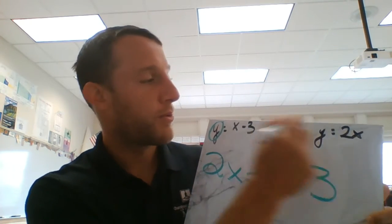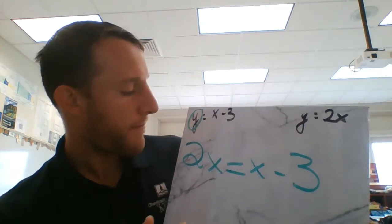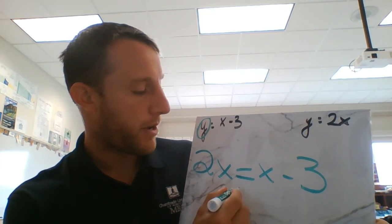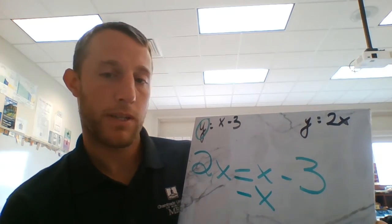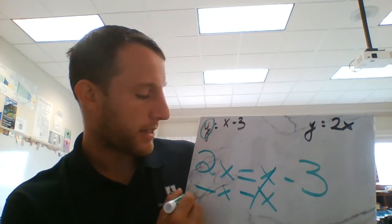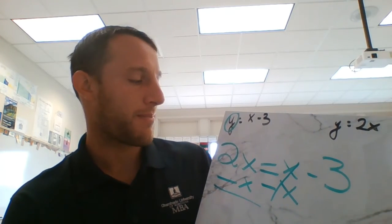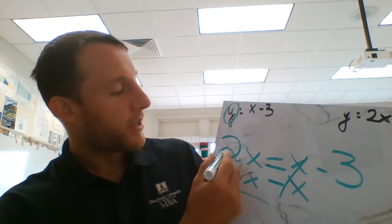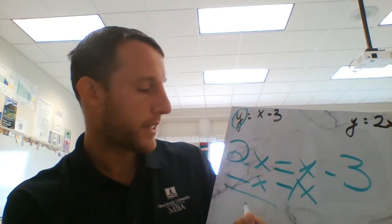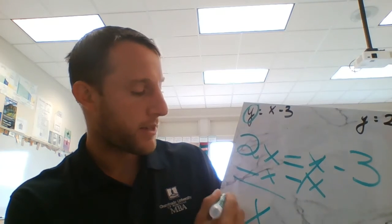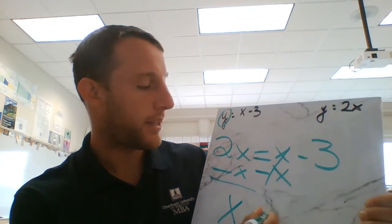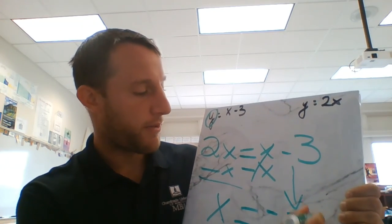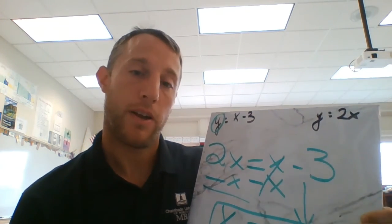These are two separate equations. Now I can solve for X — I need to isolate the variable. I'll subtract an X from this side, so these will cancel, and I'll also subtract an X from this side. And now I have two X minus X equals negative three. So two X minus one X is just going to be X, or one X. X equals negative three. So now I know what X is.